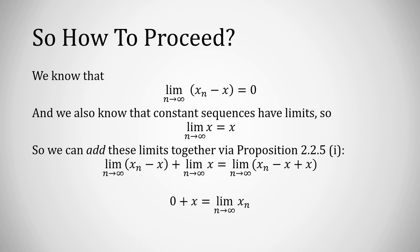Now on the left, we have 0 because we know the limit of xn minus x is 0. And we also know the limit of a constant is just that constant. And on the right, inside parentheses, we can cancel the x's. And now we have our desired conclusion. The limit of xn equals x.